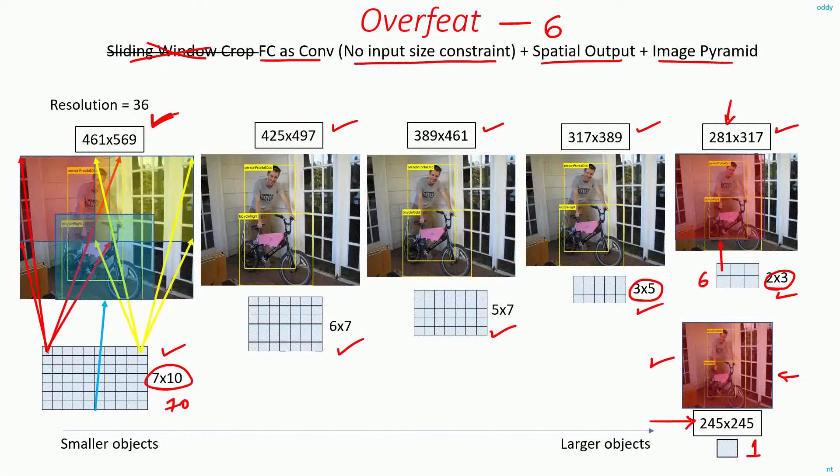For example, this value here, whatever the confidence and the bounding box predictions you will get at this position, it will reflect the object that is detected in this red patch. And this value here will reflect the object that is detected in this yellow patch. Similarly, this value here will be able to detect the object in this blue patch.